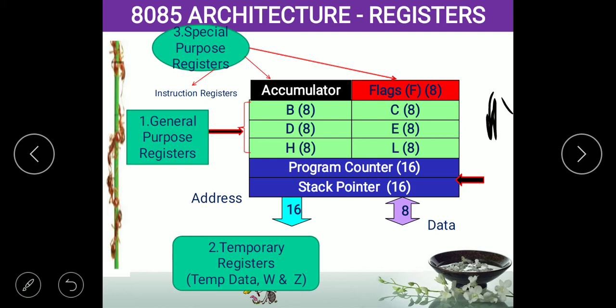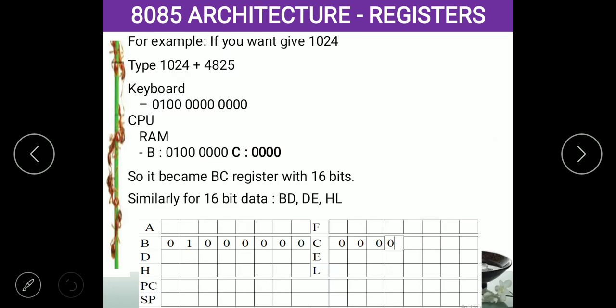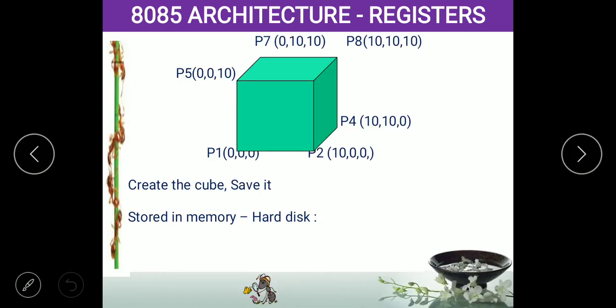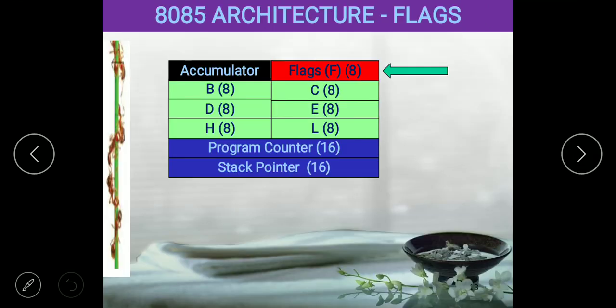If you give more than 64-bit data, the register will not perform any operations. At that time you will receive an overflow warning or error message. Now we are going to see what a stack pointer is. And now we are going to discuss the flag register.